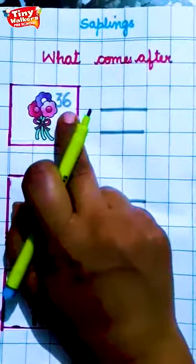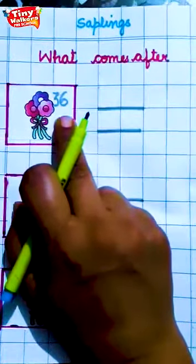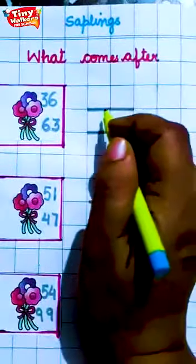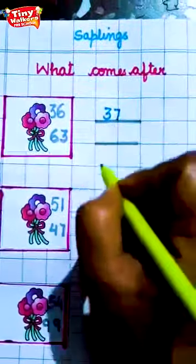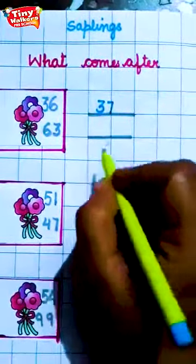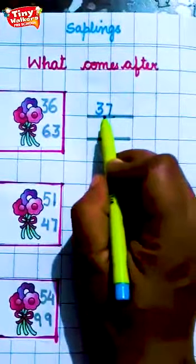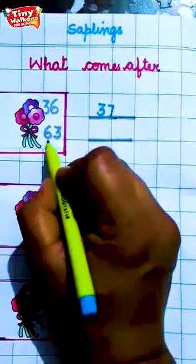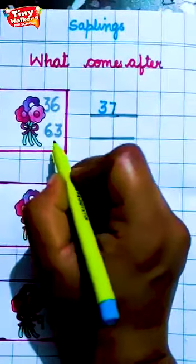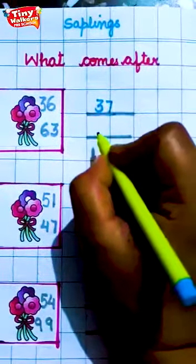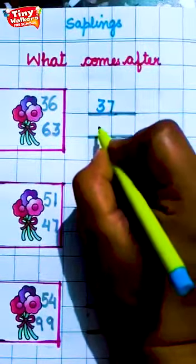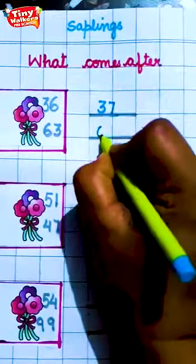36. Can you say what will be after 36? Are you saying? Yes, 37. While writing, touch the line. This is 63. What comes after 63? 63, 64.